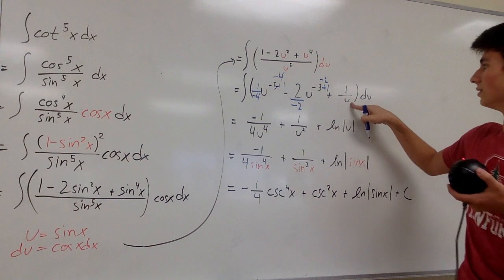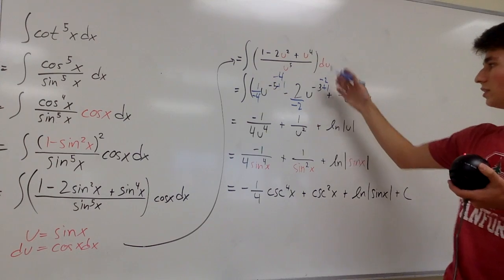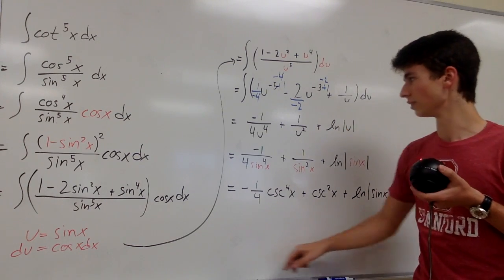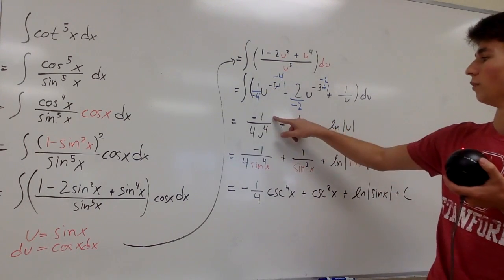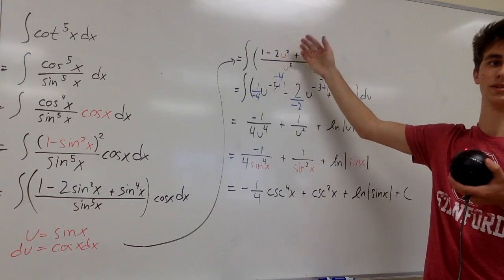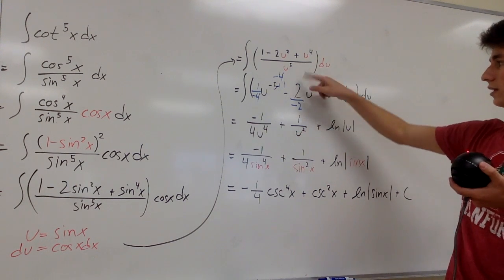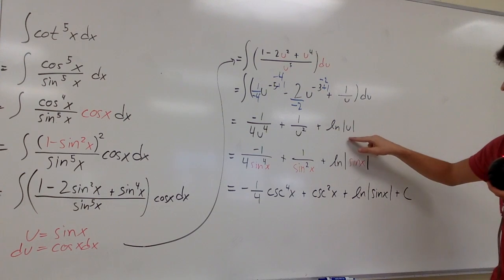And this is equal to natural log of the absolute value of u. So we can do our integration and we end up with negative one over four u to the fourth because we can bring the negative power down to the denominator and make it a positive power, plus one over u squared because the negative twos cancel, plus natural log of u.